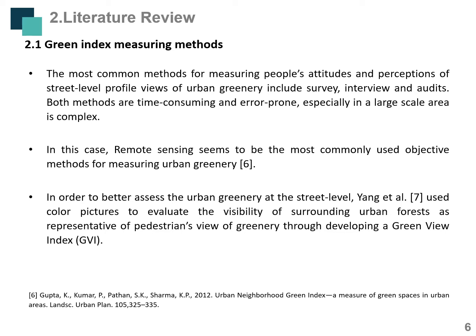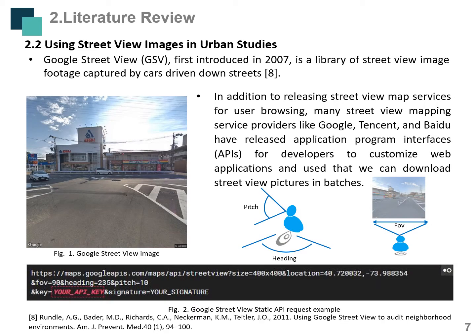In order to better assess urban greenery at the street level, Yang et al. proposed using color pictures to evaluate the visibility of surrounding urban forests as representative of pedestrians' view of urban greenery through developing a green view index. Google Street View is the most commonly used street-level imagery source. With enrichment of street-view image resources, providers like Google, Tencent, and Baidu have released application programming interfaces for developers to customize web applications, allowing us to download street-view pictures in batches.